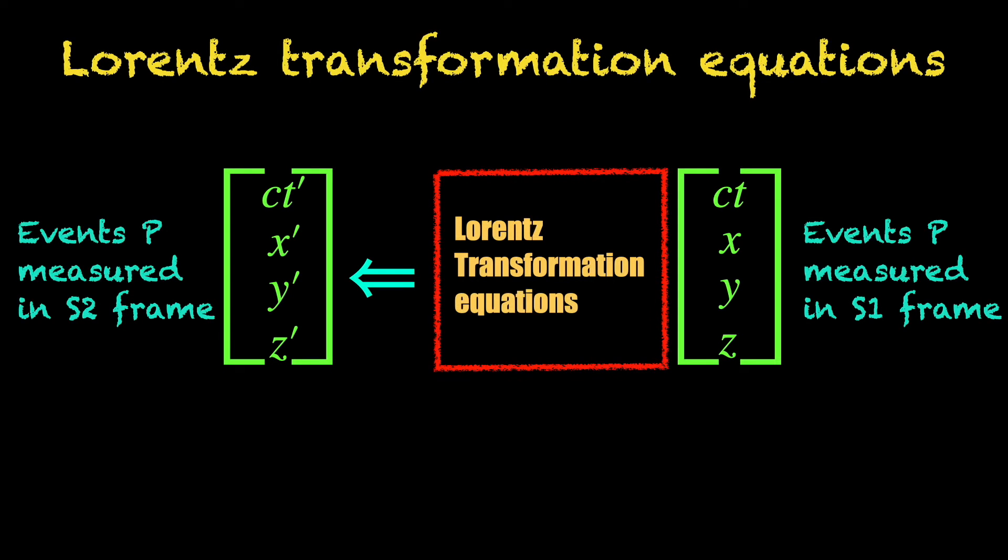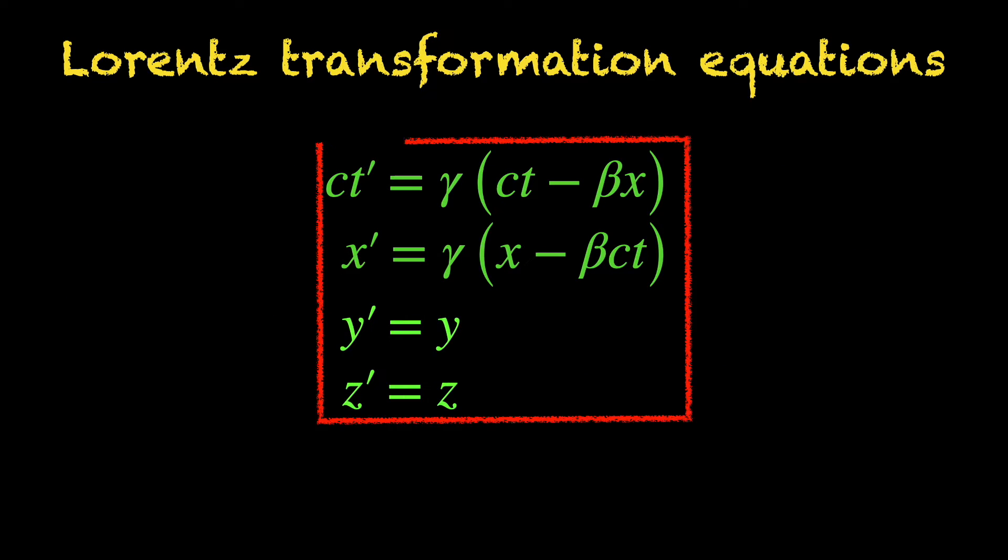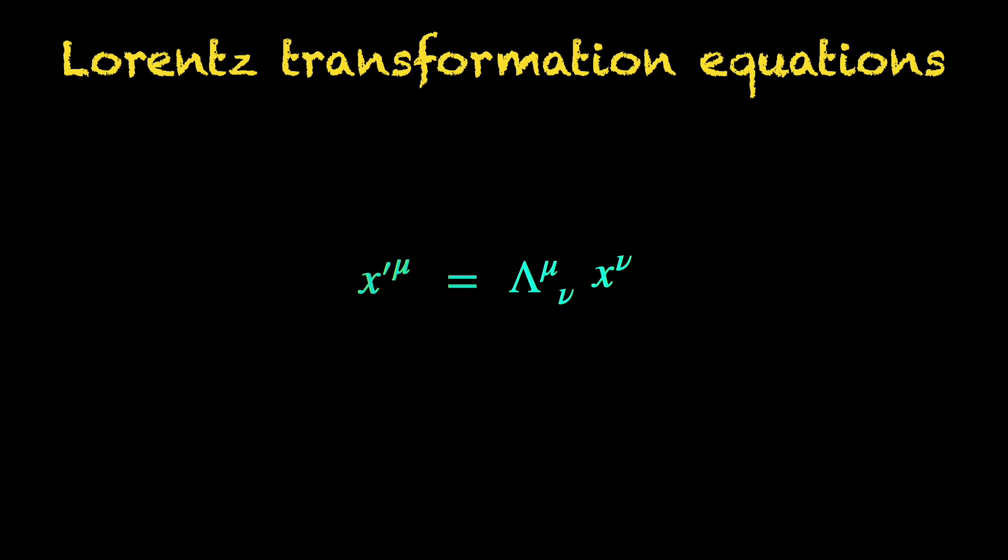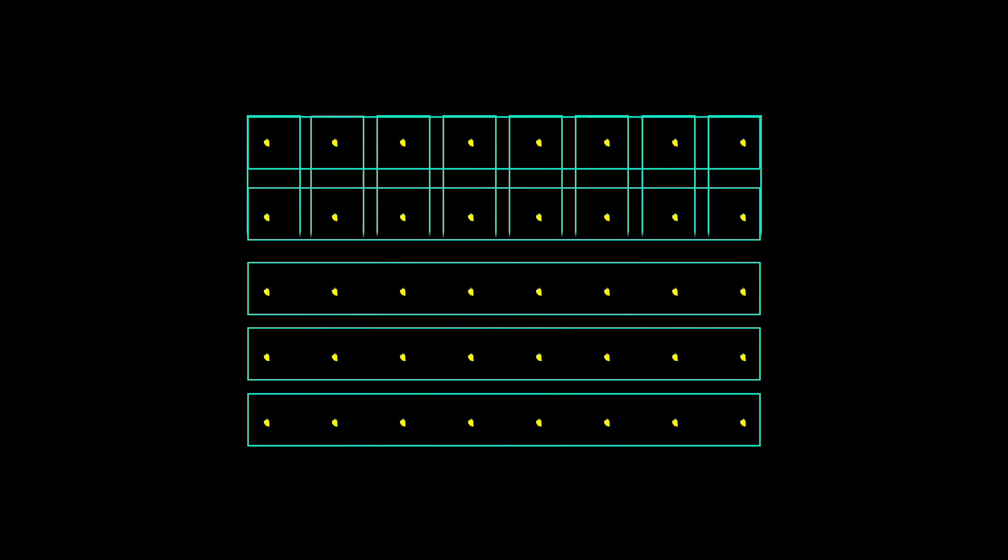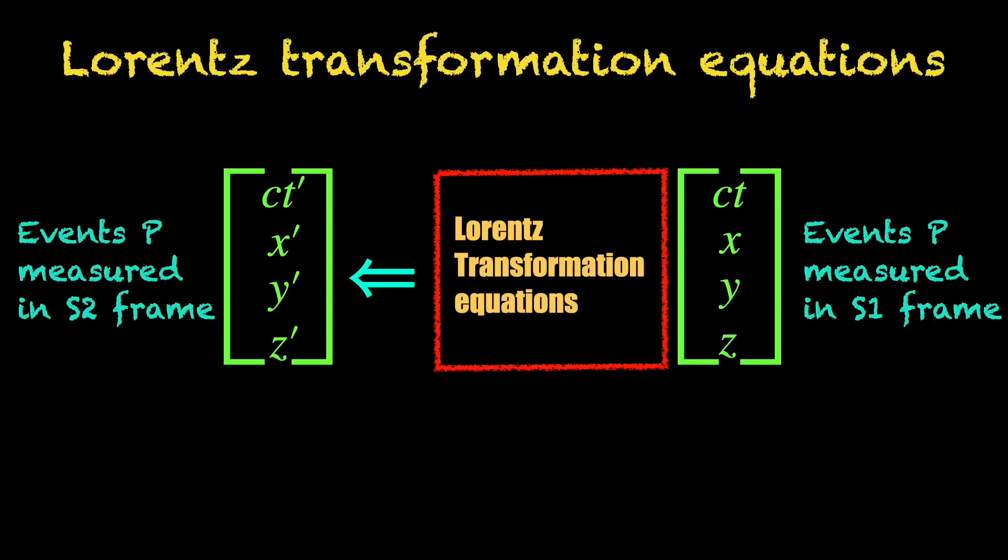Coming back to our topic, let us try to cast the four Lorentz transformation equations into one, a matrix equation. A matrix is a collection of numbers or functions that are arranged in an array of rows and columns. How a matrix equation works may give you a brain freeze if you are seeing it for the first time, but it is easy peasy once you get the hang of it.